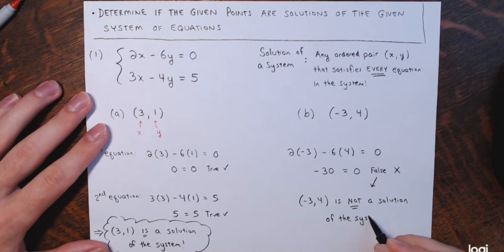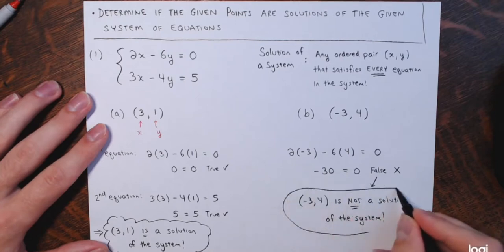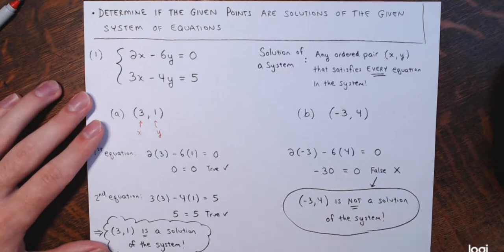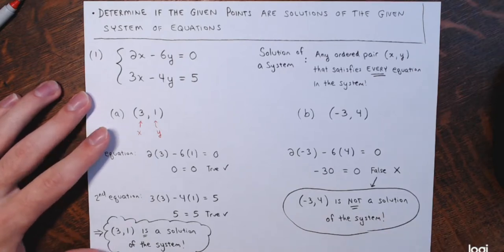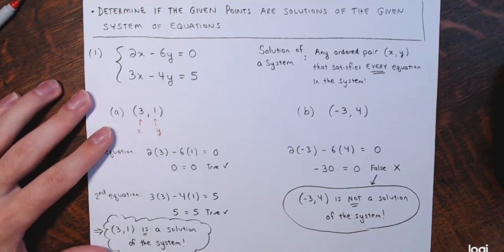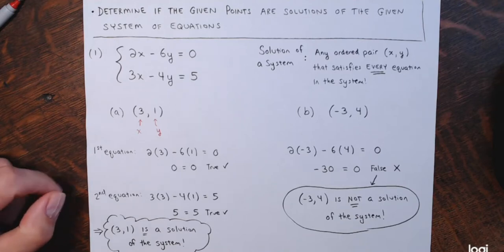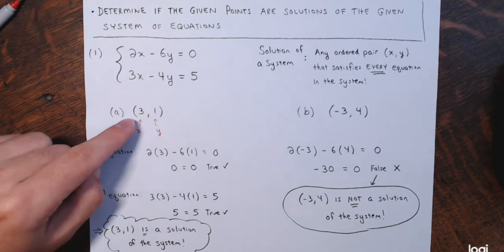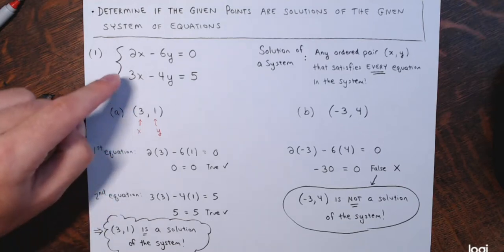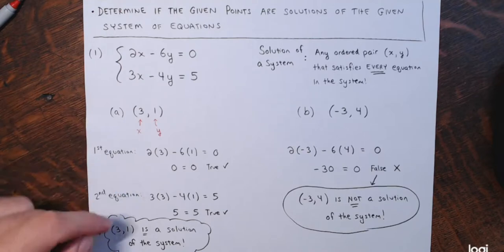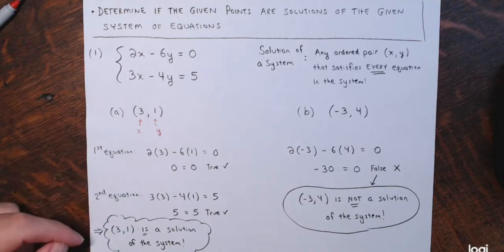I don't even need to check the other equation. As soon as you find one equation that's made false, it's not a solution of the system. But in order to show that something is a solution of a system, you have to go through all of them and show that all are true.